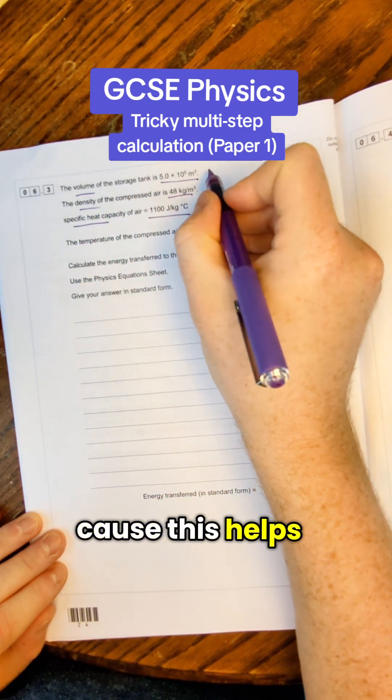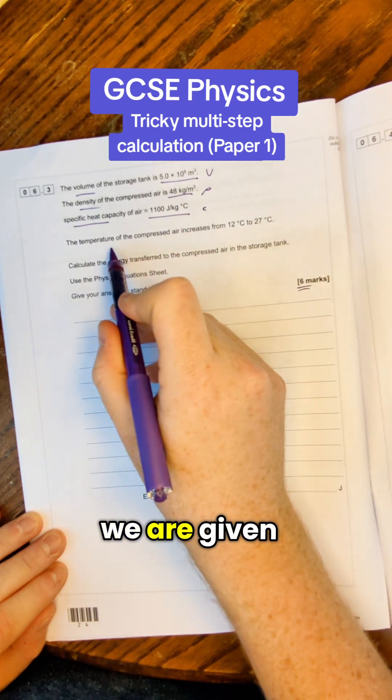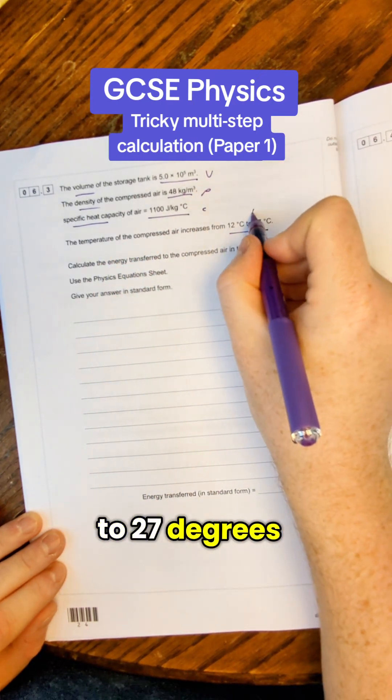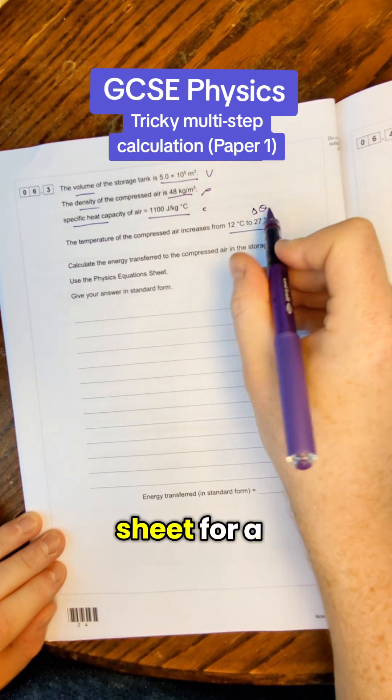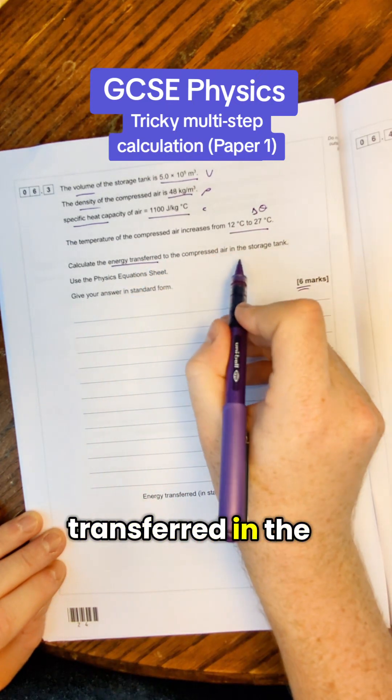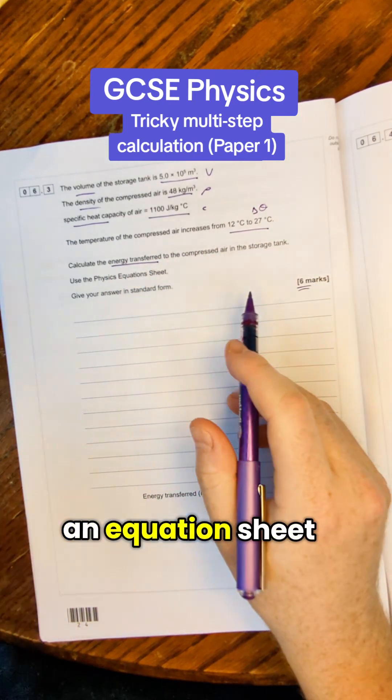I'm going to write down the symbols here because this helps when we're looking for an equation. We are given the temperature of the air is increasing from 12 to 27 degrees. That symbol in your equation sheet for AQA is delta theta. We're asked to calculate the energy transferred in the storage tank and let's use an equation sheet to help us out.